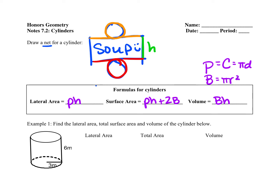For the first cylinder, I'm going to determine the perimeter of the base, height, and area of the base, then plug them in. The perimeter of the base is pi times diameter. Since our radius is 3, our diameter is 6, so the perimeter is 6π. The height is the distance between our two bases, so that's 6. The area of the base is pi r squared, so for this one it's 9π.